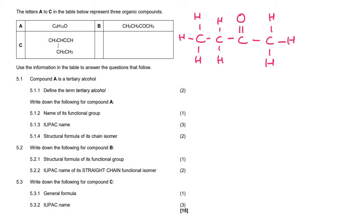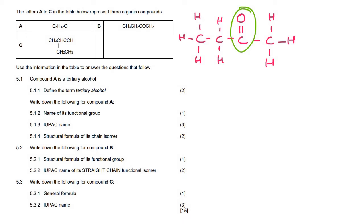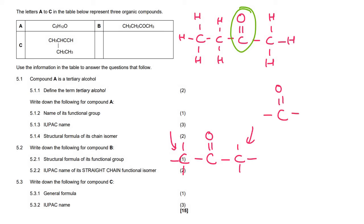Some of you might have said aldehyde, but with an aldehyde the double-bond oxygen is always on the side of the molecule. Because it's not on the side here, this is a ketone. The structural formula of a ketone's functional group is C double-bond O, and you must also show the two carbons on either side of it, confirming that the carbonyl is in the middle of the molecule. If you only showed C=O without those carbons, it could be interpreted as an aldehyde.